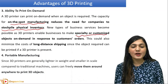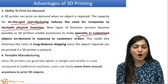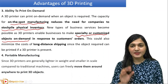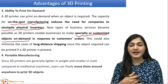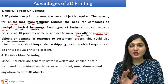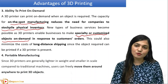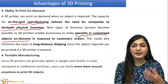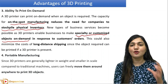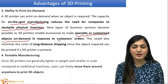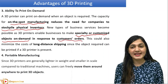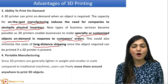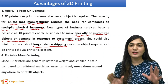We can also have a specialty or customized object on demand. If I need a customized design — let's say jewelry — I will give it as a customized design to a manufacturer and he will make it with the help of 3D printing. Because jewelry already costs a lot, we don't need to keep stock. In response to the customer's order, the customized design will be made exactly. This can also minimize the cost of long-distance shipping.